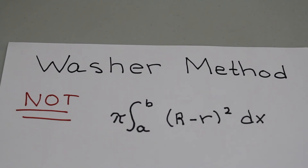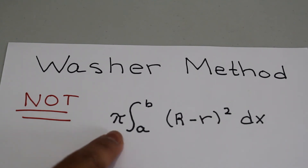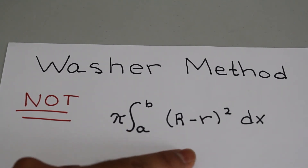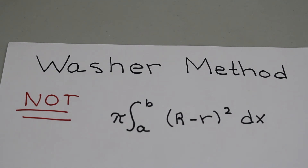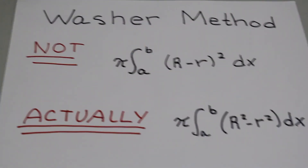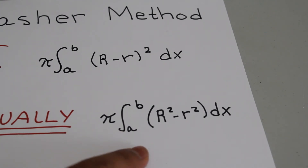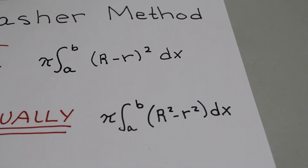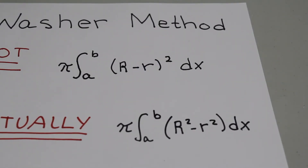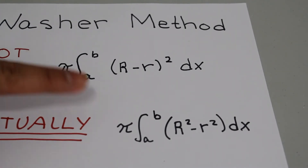Another common mistake concerns the washer method. It is not pi times the integral of the outer radius squared minus the integral of the inner radius squared computed separately. Rather it's pi times the integral from a to b of (outer radius squared minus inner radius squared). Always remember not to confuse these two forms — I'll cover the washer method in detail in a separate video.